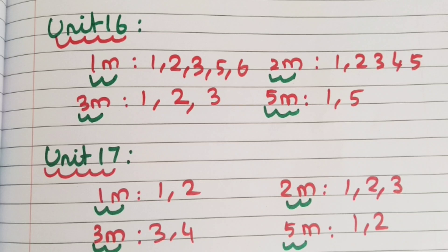Unit 17: 1 mark question — 1 and 2. 2 mark very short answer — 1, 2, 3. 3 mark short answer — 3 and 4. 5 mark long answer — 3 and 4.